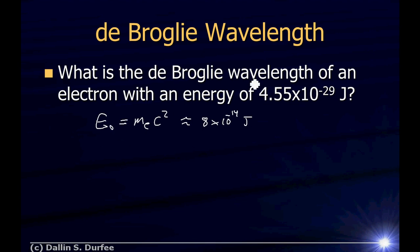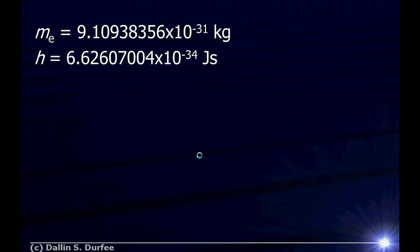This energy is way smaller than the rest energy, which tells us that this problem is not relativistic — we don't need to use relativity. Many orders of magnitude difference between the kinetic energy and the rest energy means this particle is moving slowly compared to the speed of light. So 4.55 times 10 to the negative 29 joules is our kinetic energy, and this is a non-relativistic problem.